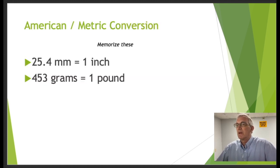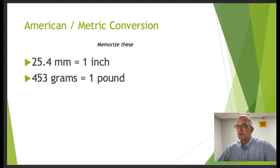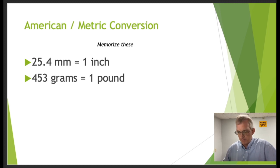Now let's look at converting American to metric. To convert millimeters to inches, there are 25.4 millimeters in one inch. There are also 453 grams in one pound. These are a couple of values you should memorize, especially 25.4.